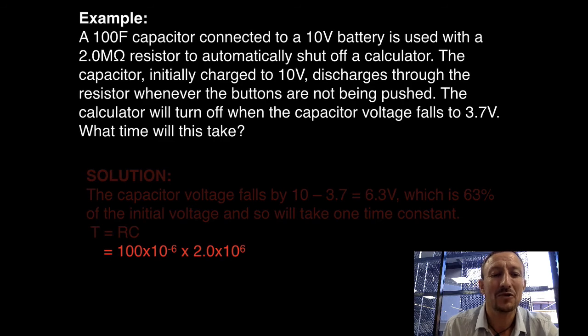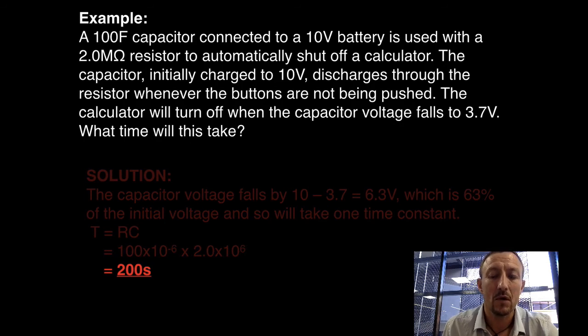So it's 100 microfarads, which is 100 times 10 to the negative 6. This is multiplied by the resistance of 2 times 10 to the 6 ohms. So as a result, my time constant is 200 seconds. This means that it takes 200 seconds to fall from 10 volts to 3.7 volts from a 100 microfarad capacitor running through a 2 megaohm resistor.